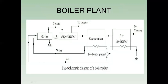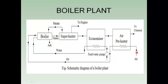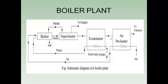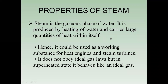This is the schematic diagram of a boiler plant. We see that firstly the air is entering the air preheater, where the air is preheated by the use of exhaust flue gases. Then from this direction the air is going to the boiler. Similarly, by the use of the feed water pump, the water is flowing to the economizer, and then from the economizer it is going to the boiler. The steam produced from the boiler then goes through the superheater, where the superheater heats the wet steam to dry steam, and then it goes to the engine.